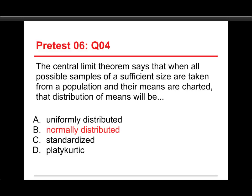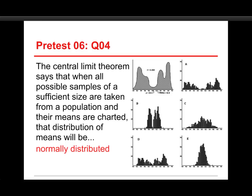Let's take a look at this one. We start with a very funky-shaped distribution on the top left, and as you sample and the samples get larger and larger, you get to the bottom right, where you have an almost perfect normal distribution that has the same mean as the original one. And that's how that works.